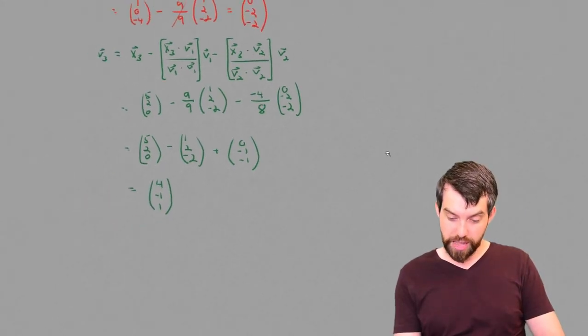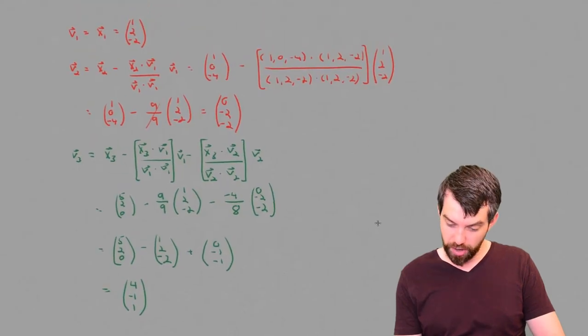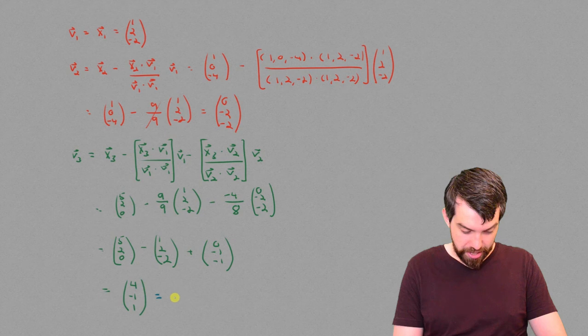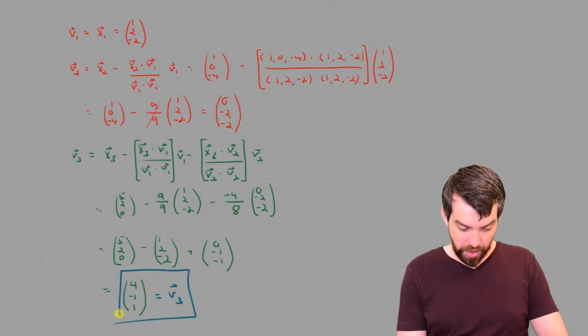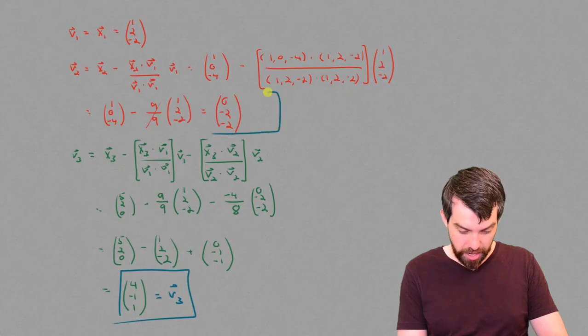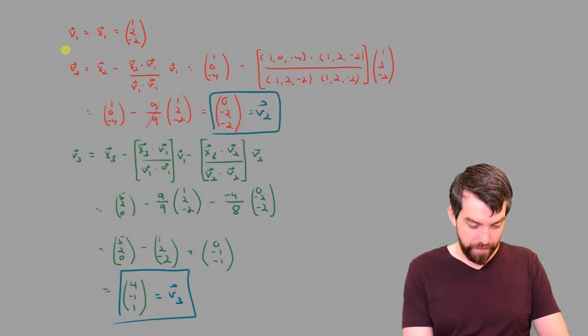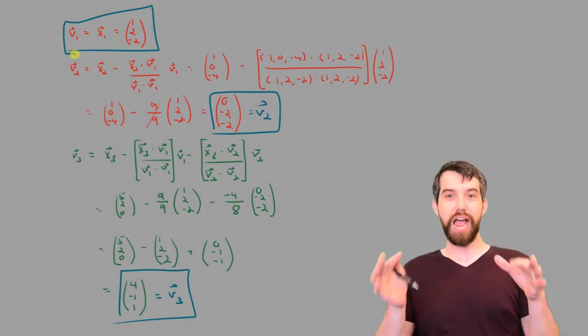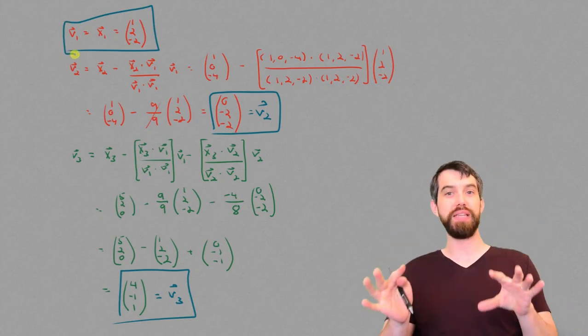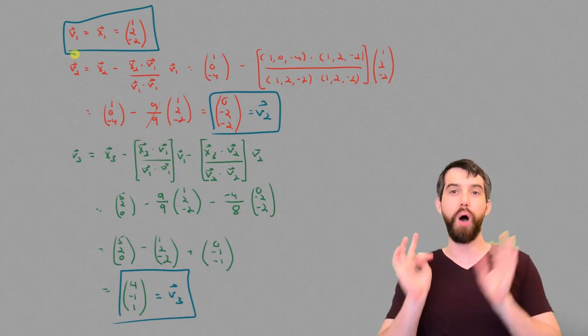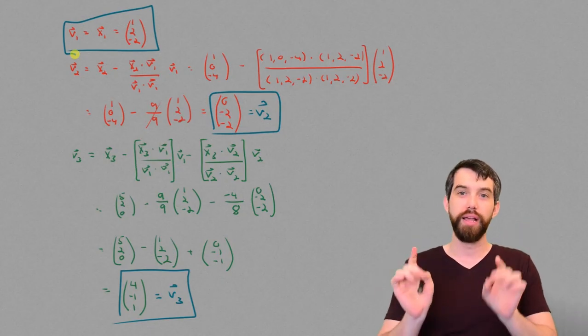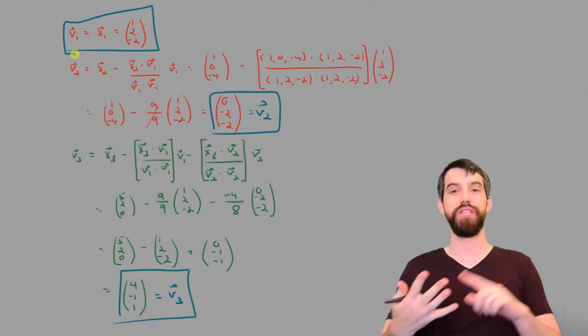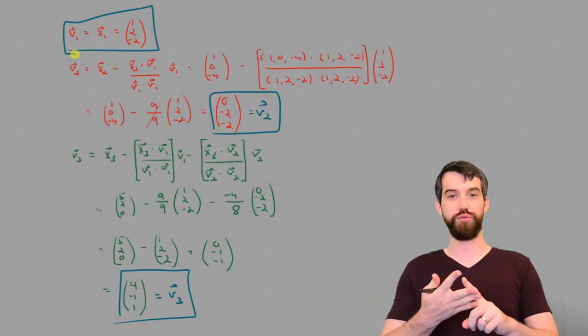So then, if I look collectively at what it is that I've computed here, I'm going to have these three different answers. I've got the v3 down here. That's this value. I've got my v2 right here. That's my v2. And I have my v1 up here. So those three vectors together are an orthogonal basis. They will always be orthogonal. And they will always be a basis for the span of the original three vectors, the x1, the x2, and the x3.